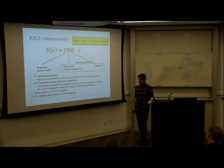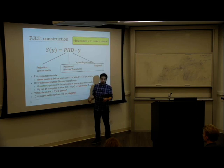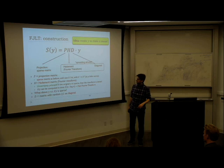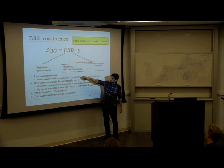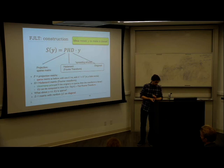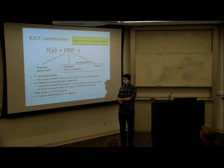Matrix D is diagonal with random ±1 entries on the diagonal. The bad Y's — those for which HY is sparse — are sufficiently randomized by D so they no longer produce sparse output. This requires a proof, which we don't have time for. That is also why the sparse P matrix needs slightly higher target dimension, something like K². We are out of time today; we'll continue tomorrow morning.